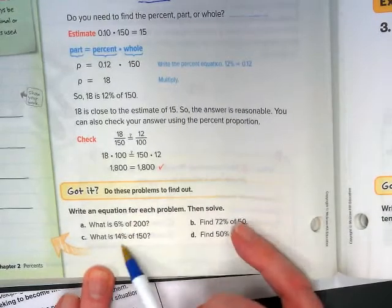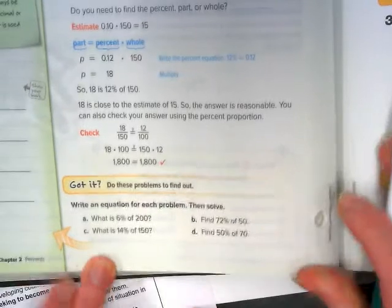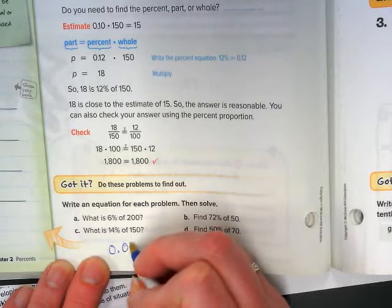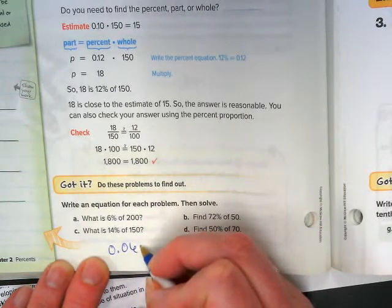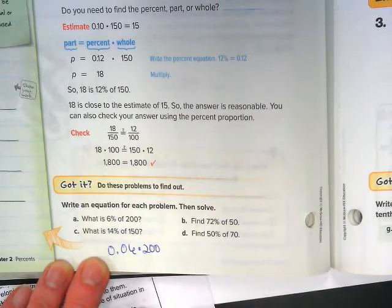So let's try these problems here. I'm going to do just A and B. If I have 6%, that's going to be 0.06 times 200.